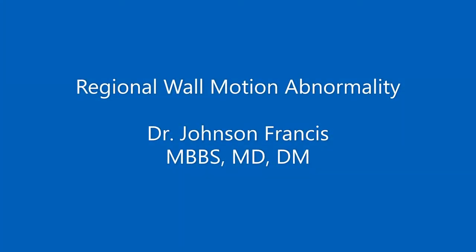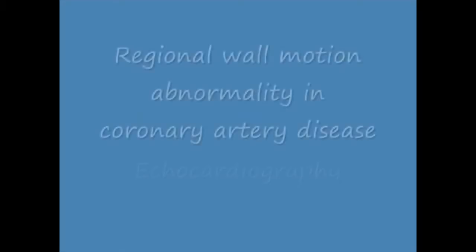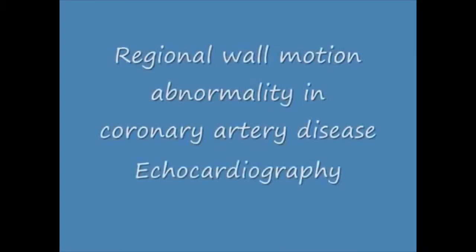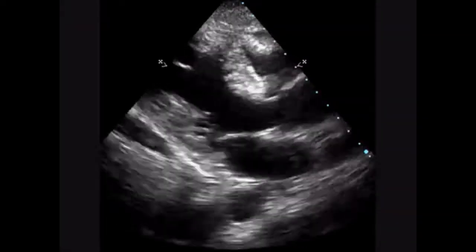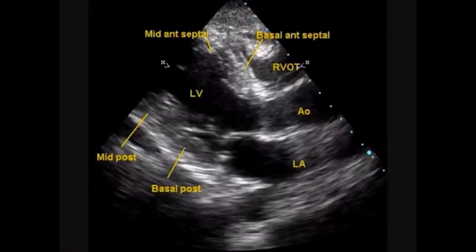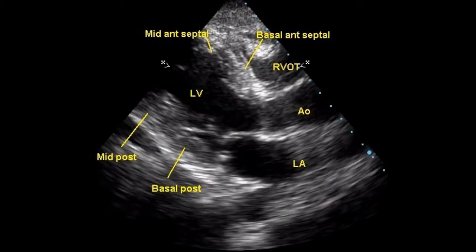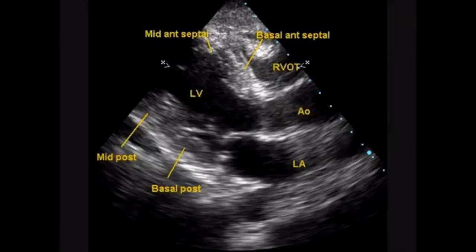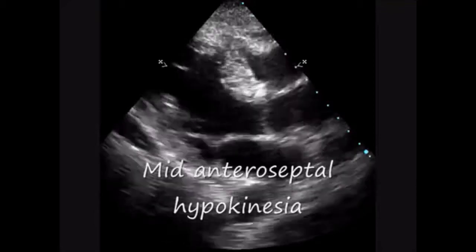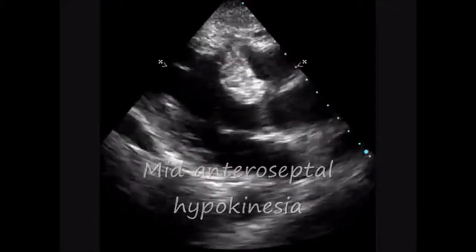Regional wall motion abnormalities are common in coronary artery disease. This is the parasternal long axis view. In this view you see the mid anterior septal, basal anterior septal, basal posterior septal and mid posterior segments. Mid anterior septal hypokinesia is seen here.